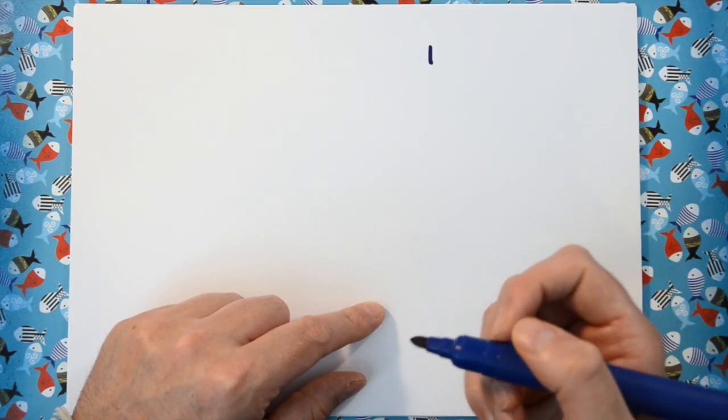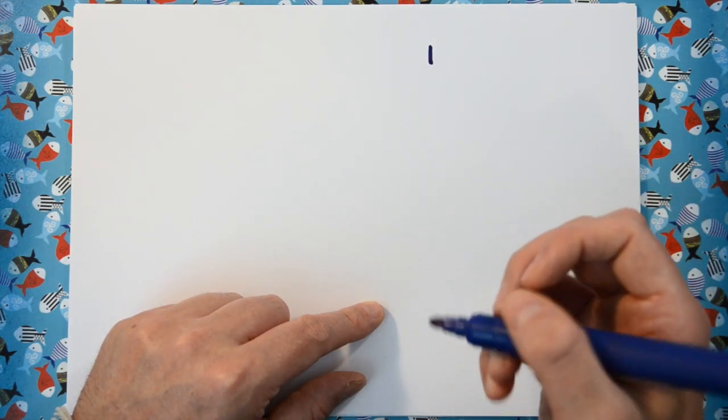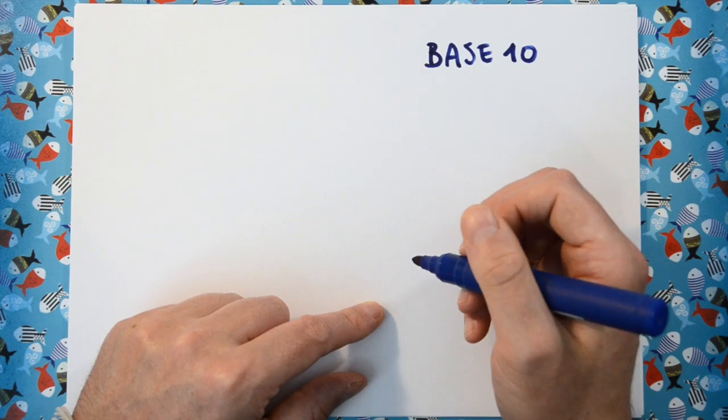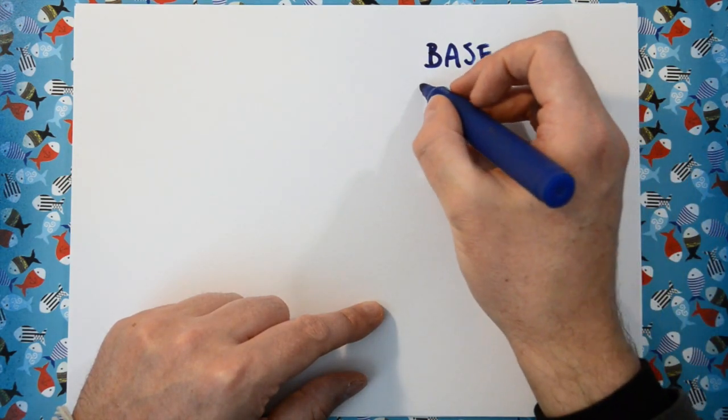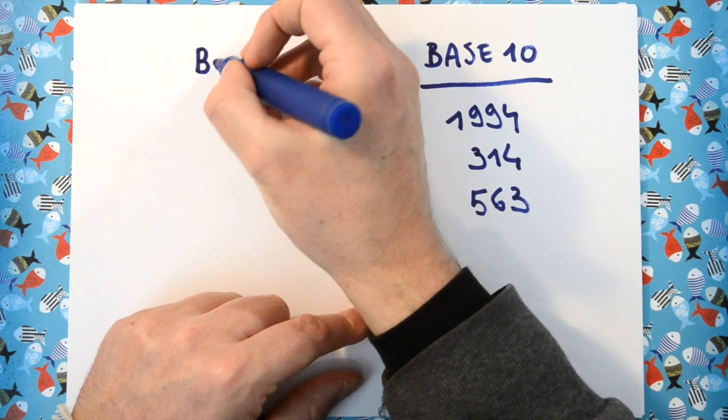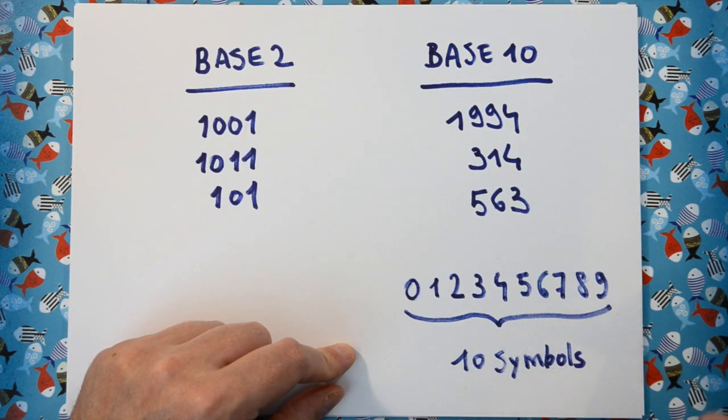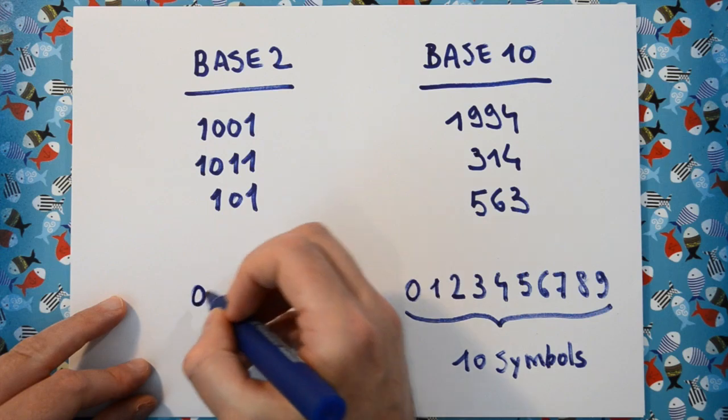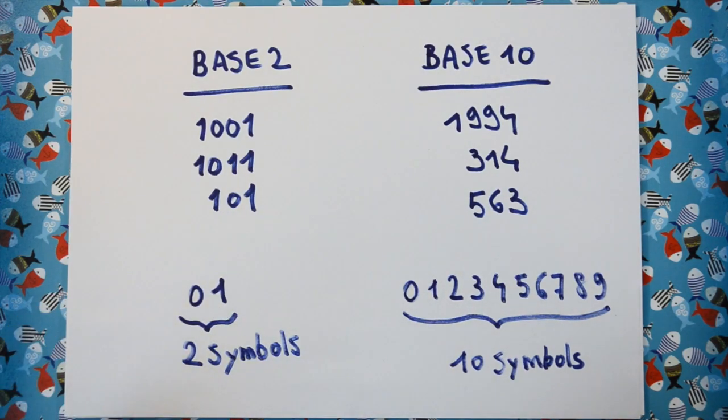Binary numbers are just numbers really, but instead of using base 10, which we normally do, it's just using base 2. What this means is that instead of using 10 symbols 0 to 9, we're only using two symbols 0 and 1.